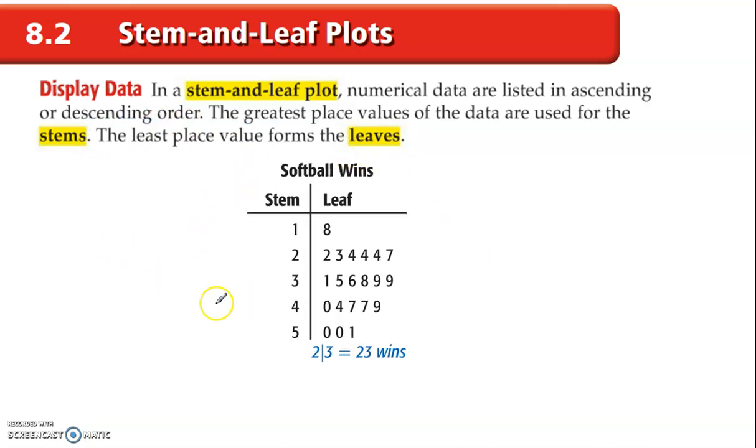All right, so here's an example of a stem and leaf plot. Okay, notice here we have all the data, and down here, very important, is a key. Every stem and leaf plot has to include a key. The key tells you how to read the stem and leaf plot. So 2 slash 3 means 23. It could mean 2.3, or whatever else the key might suggest. So in this case, it's 23, and what is it? 23 wins.